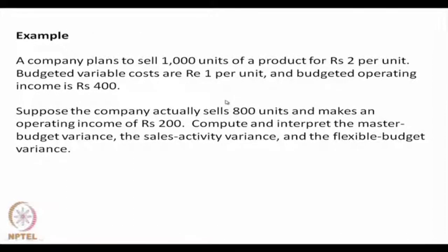Let us take an example to illustrate this. A company plans to sell 1,000 units of a product for rupees 2 per unit. Budgeted variable costs are rupee 1 per unit and budgeted operating income is rupees 400. The company actually sells 800 units and makes an operating income of rupees 200. We are required to compute and interpret the master budget variance, sales activity variance, and flexible budget variance.